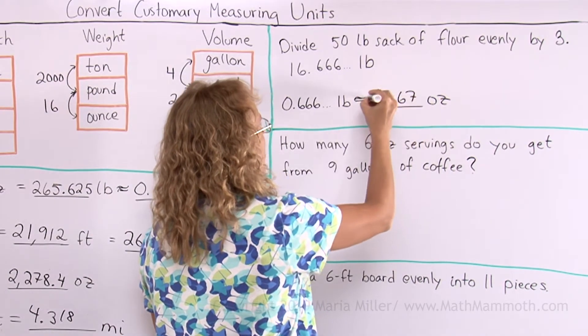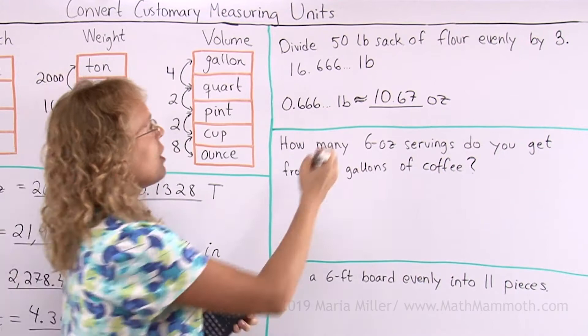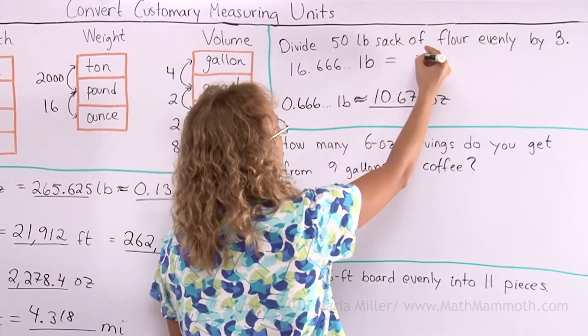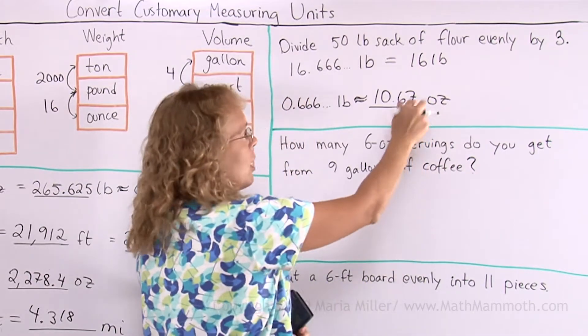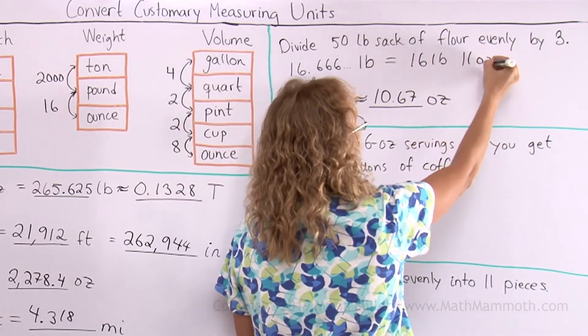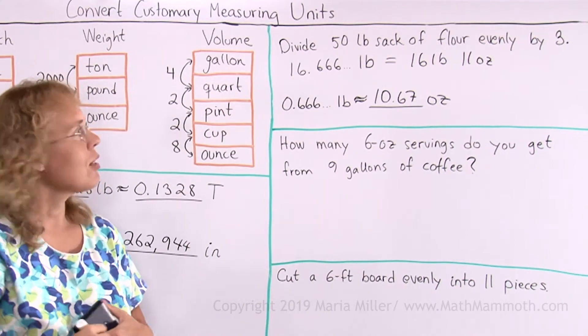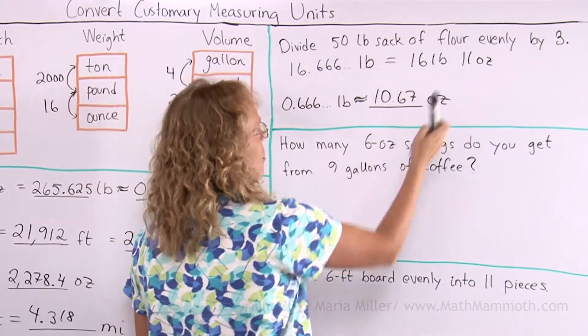10.67, this is rounded now. And so therefore now I can express this as so many pounds and ounces, 16 pounds. And I'll round this to whole ounces now, 11 ounces. So if you have a scale that measures in pounds and ounces, then that's what you would measure.